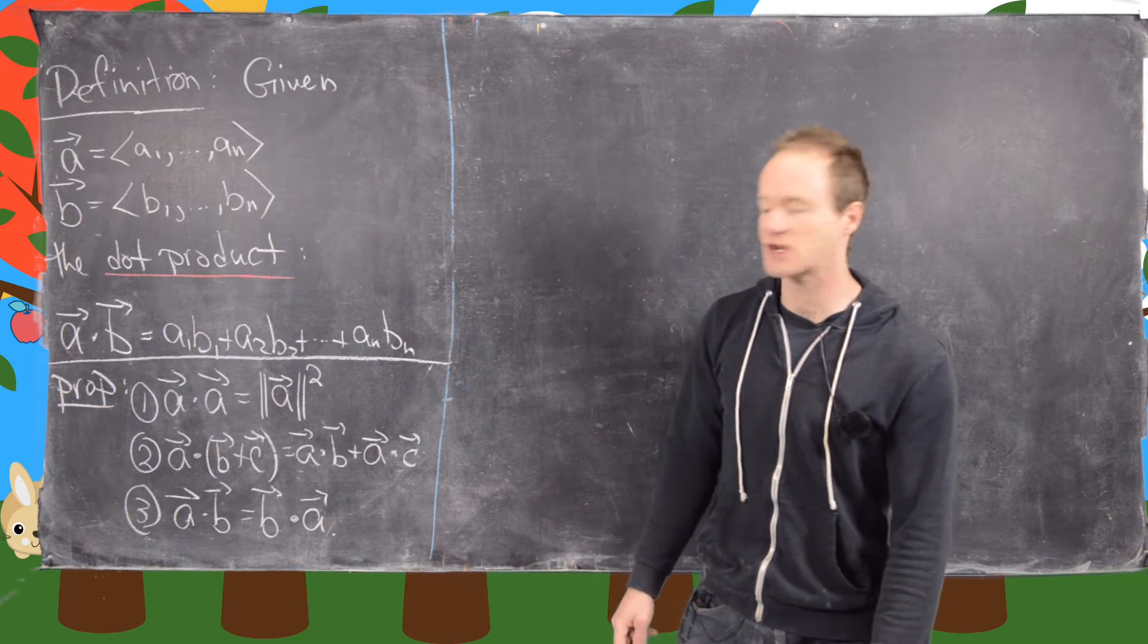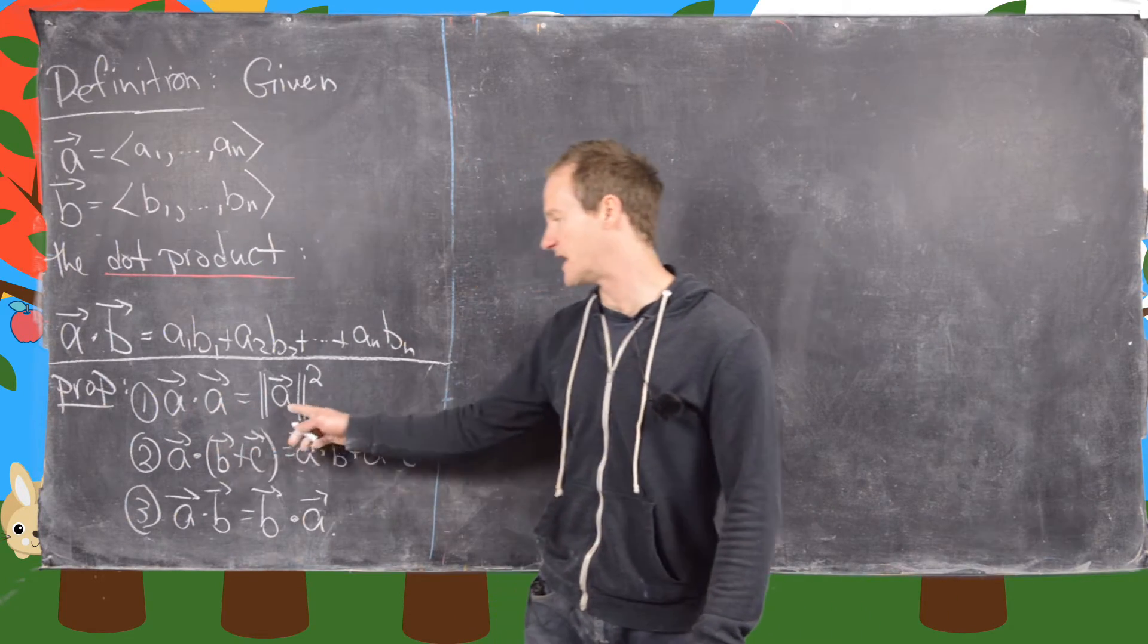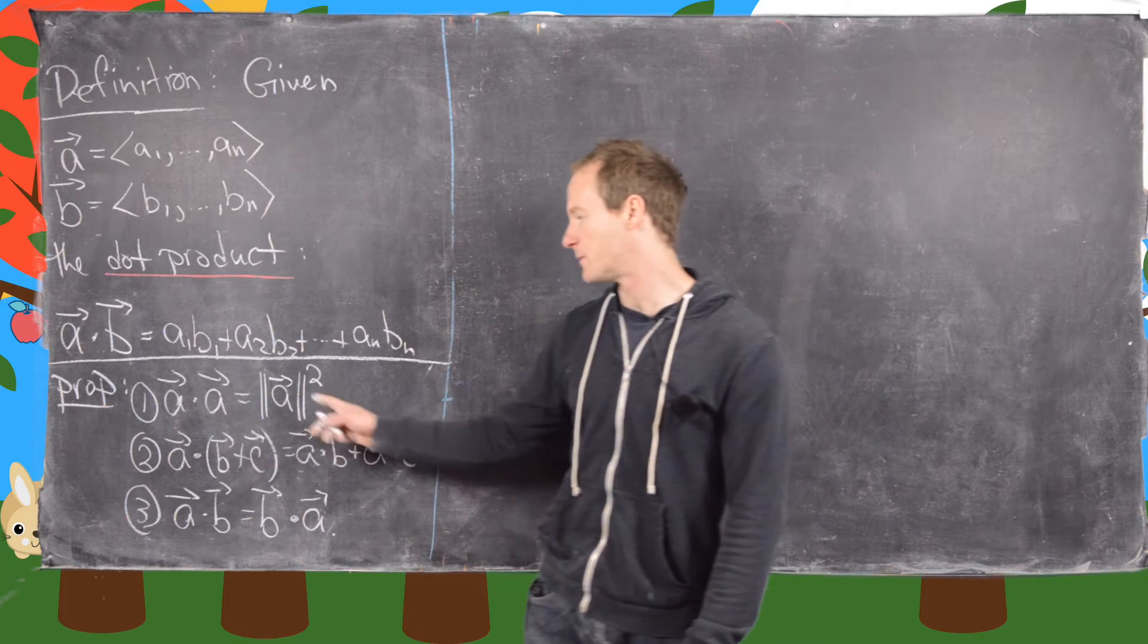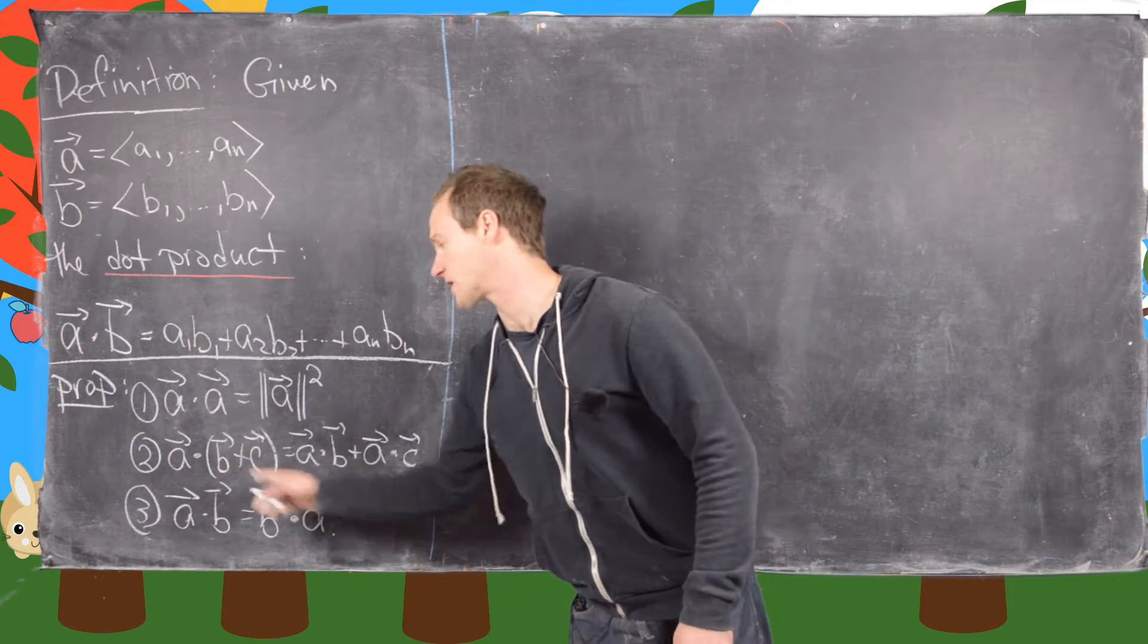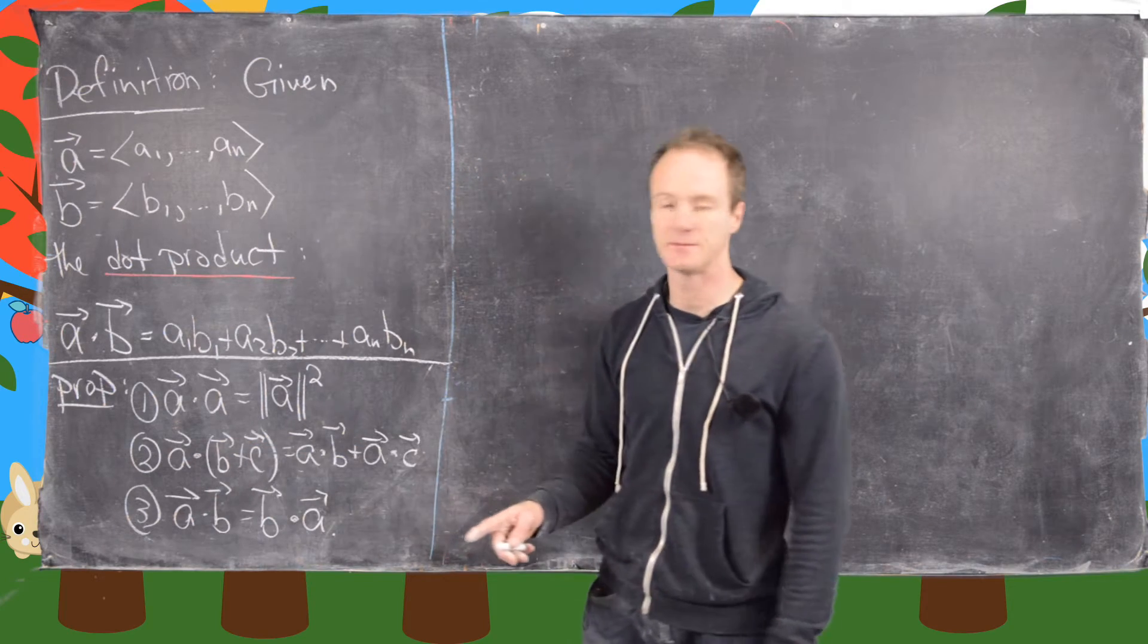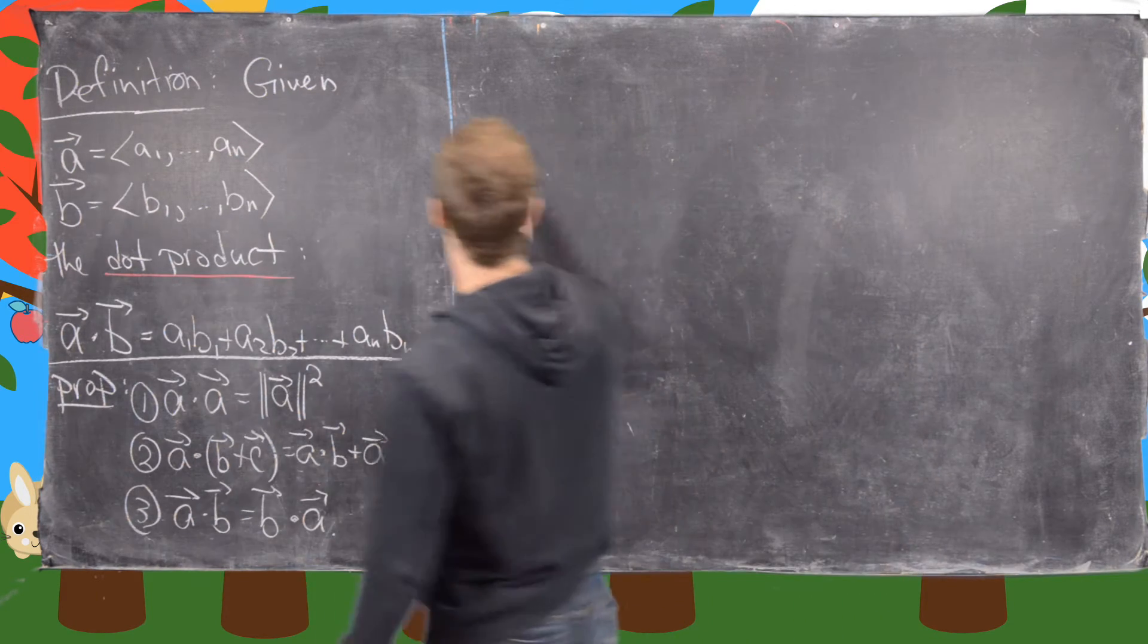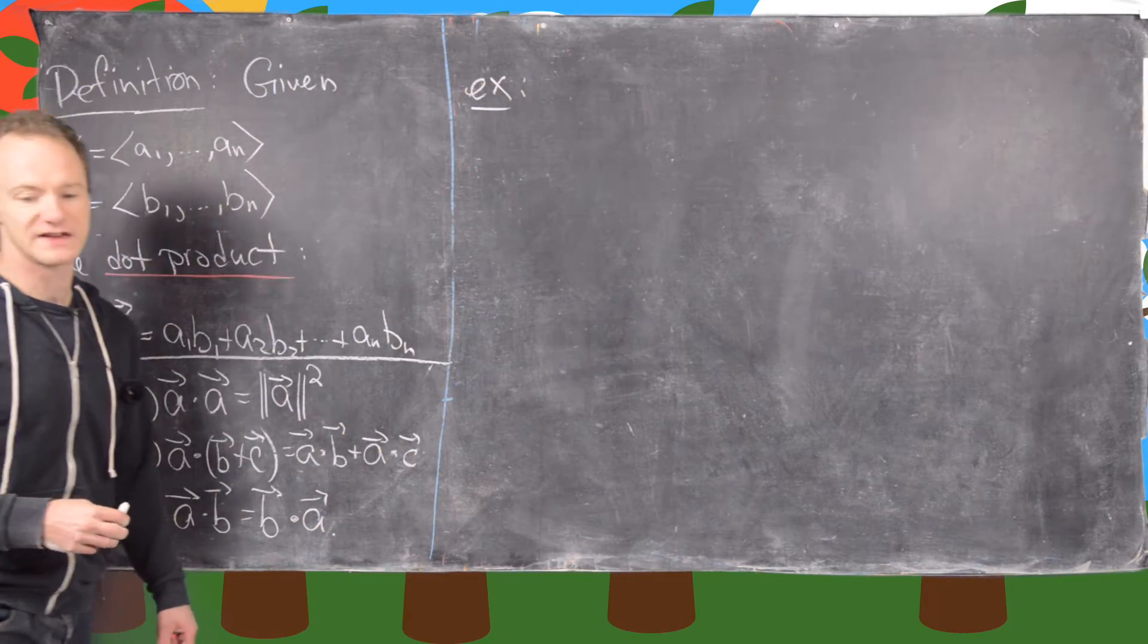Okay, so now let's look at this proposition. The dot product of a vector with itself is its length squared. So that's actually really nice because that gives us a new way of calculating the length of a vector by taking the square root of its dot product with itself. And then notice the dot product distributes over vector addition. So we have A dot B plus C is the same thing as A dot B plus A dot C. And then finally, A dot B equals B dot A. So let's look at a couple of examples first, and then we'll maybe prove one of these things on the proposition.